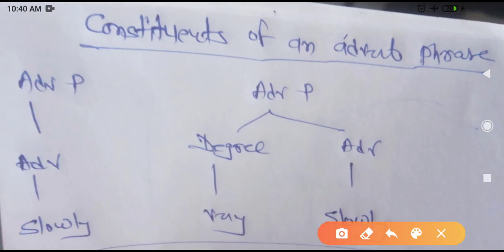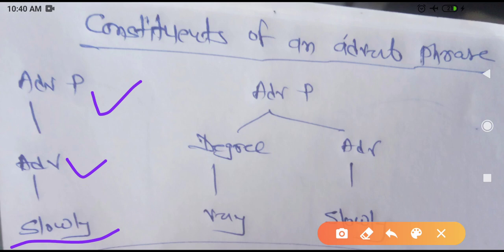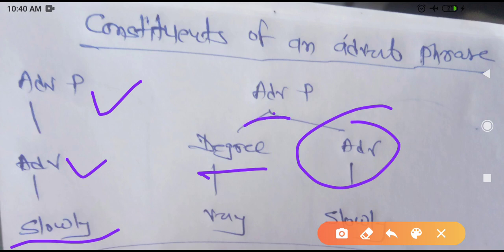Next, adverb phrase. When you are asked to identify the constituents of adverb phrase, 'slowly' is an example — it's just one adverb constituent: 'slowly.' Another example is 'very slowly' — 'very' is the degree and 'slowly' is the adverb. So two constituents are there: one is degree, another is 'slowly.'